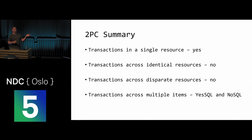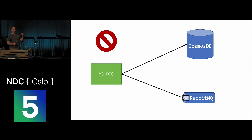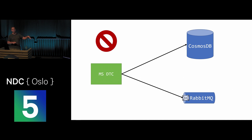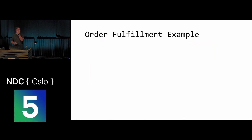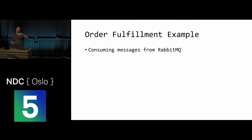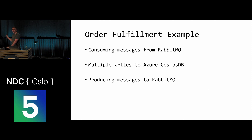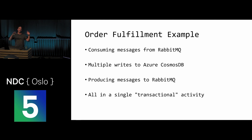Where I ran into this recently was a client moving from a single database to microservices and NoSQL databases — specifically CosmosDB as a document store and RabbitMQ as the message broker between services. None of this supported transactions, but that didn't stop them from assuming so. The example is order fulfillment: consuming messages from RabbitMQ, multiple writes to CosmosDB, producing messages via RabbitMQ, all inside a single assumed transactional activity.